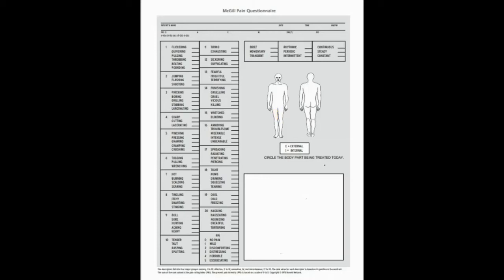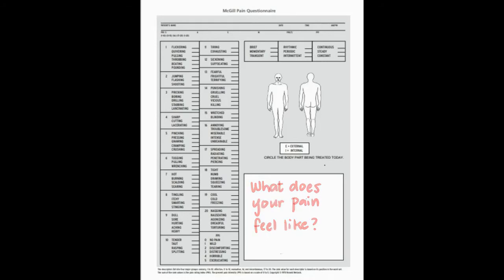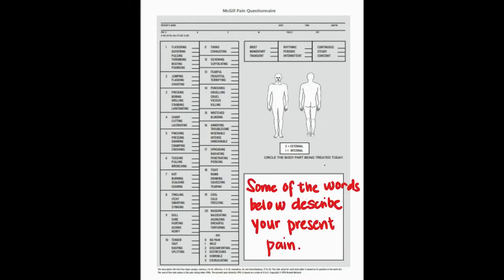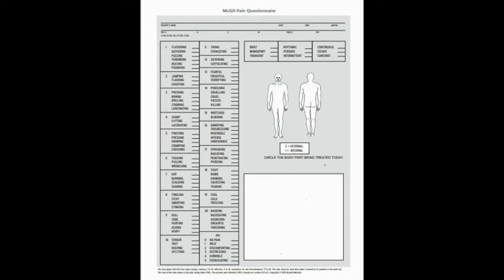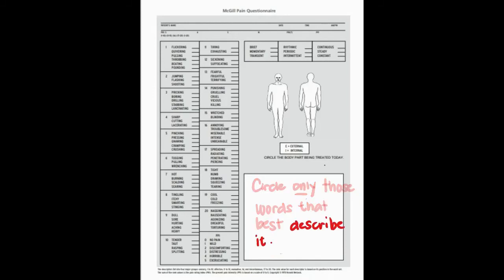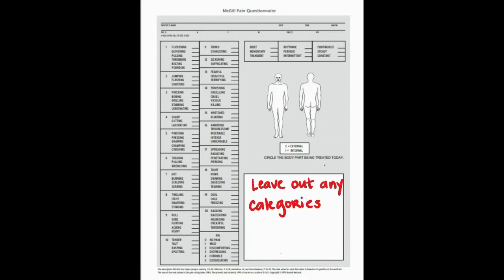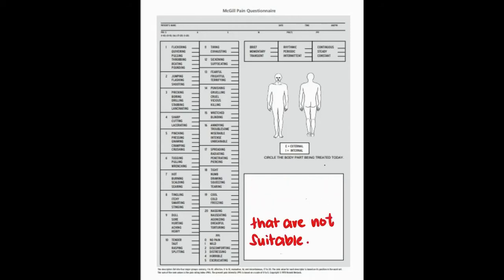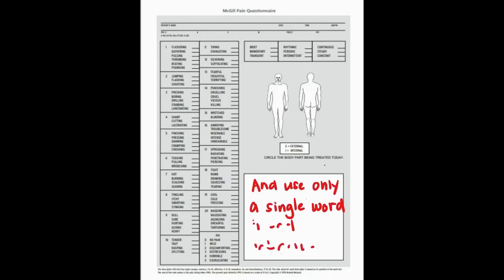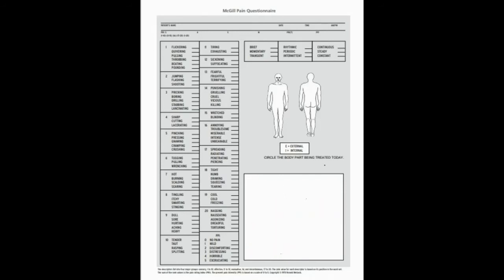Next, what does your pain feel like? Some of the words below describe your present pain. Circle only those words that best describe it. Leave out any categories that are not suitable, and use only a single word in each appropriate category — the one that applies best.